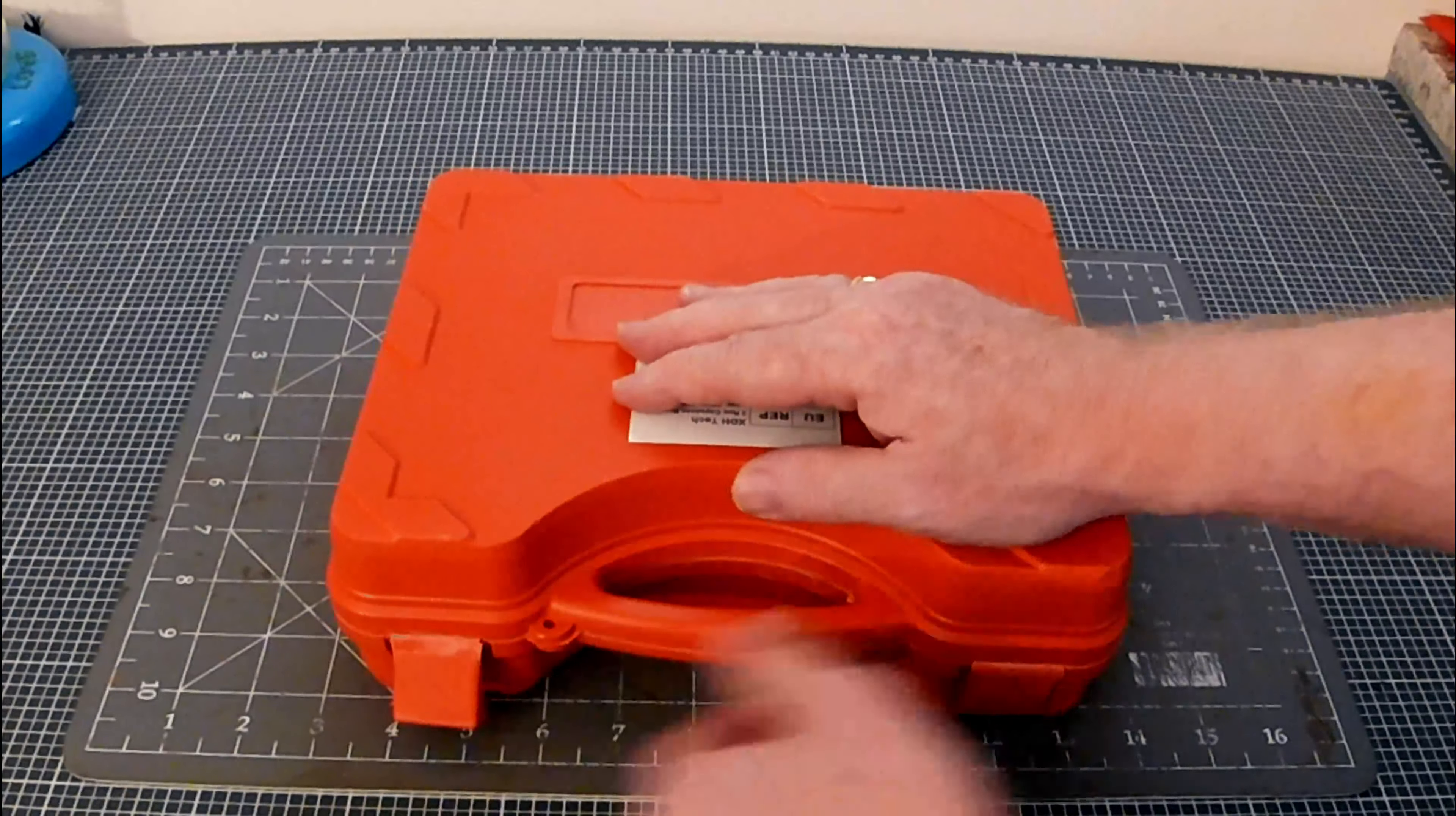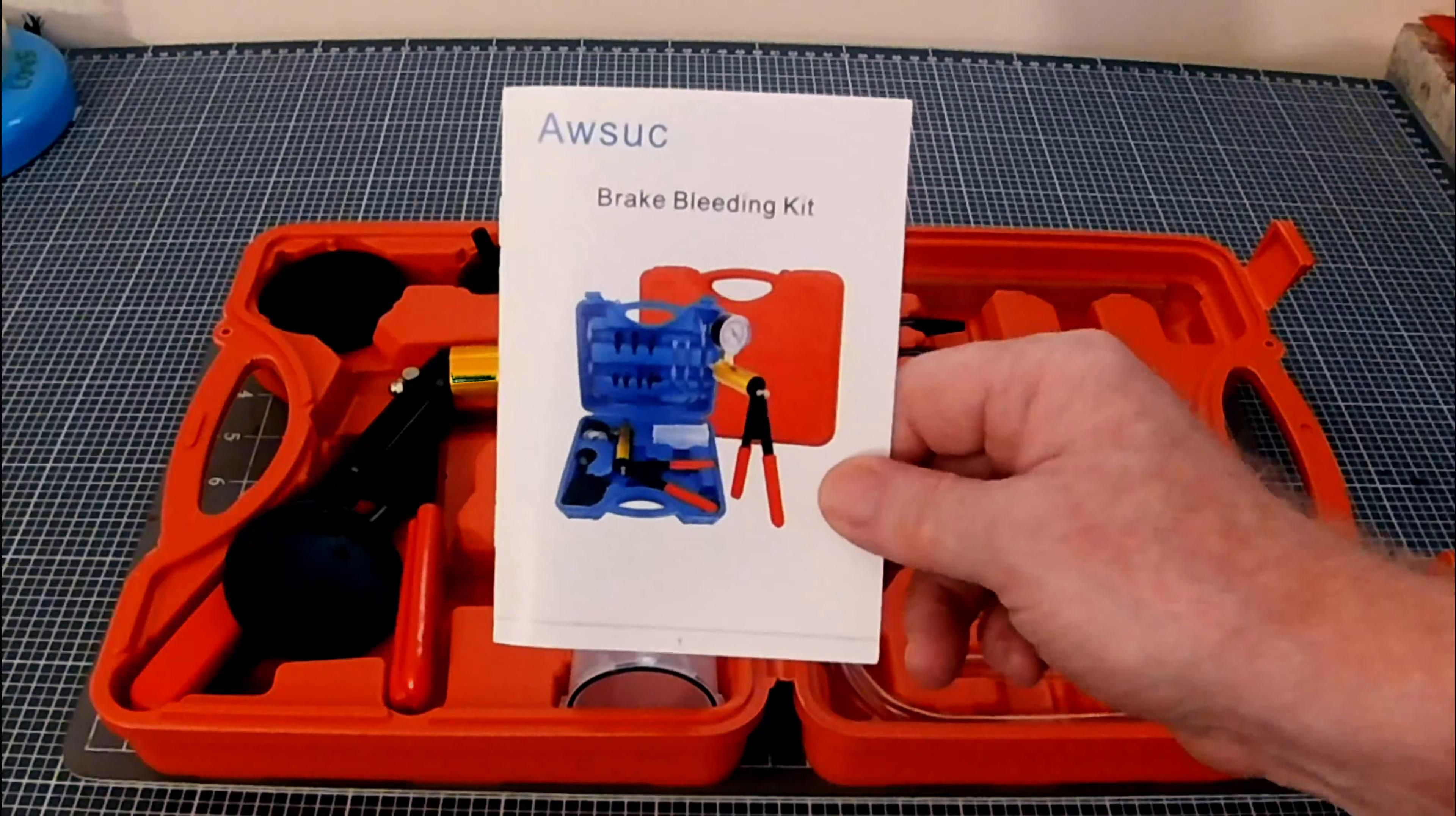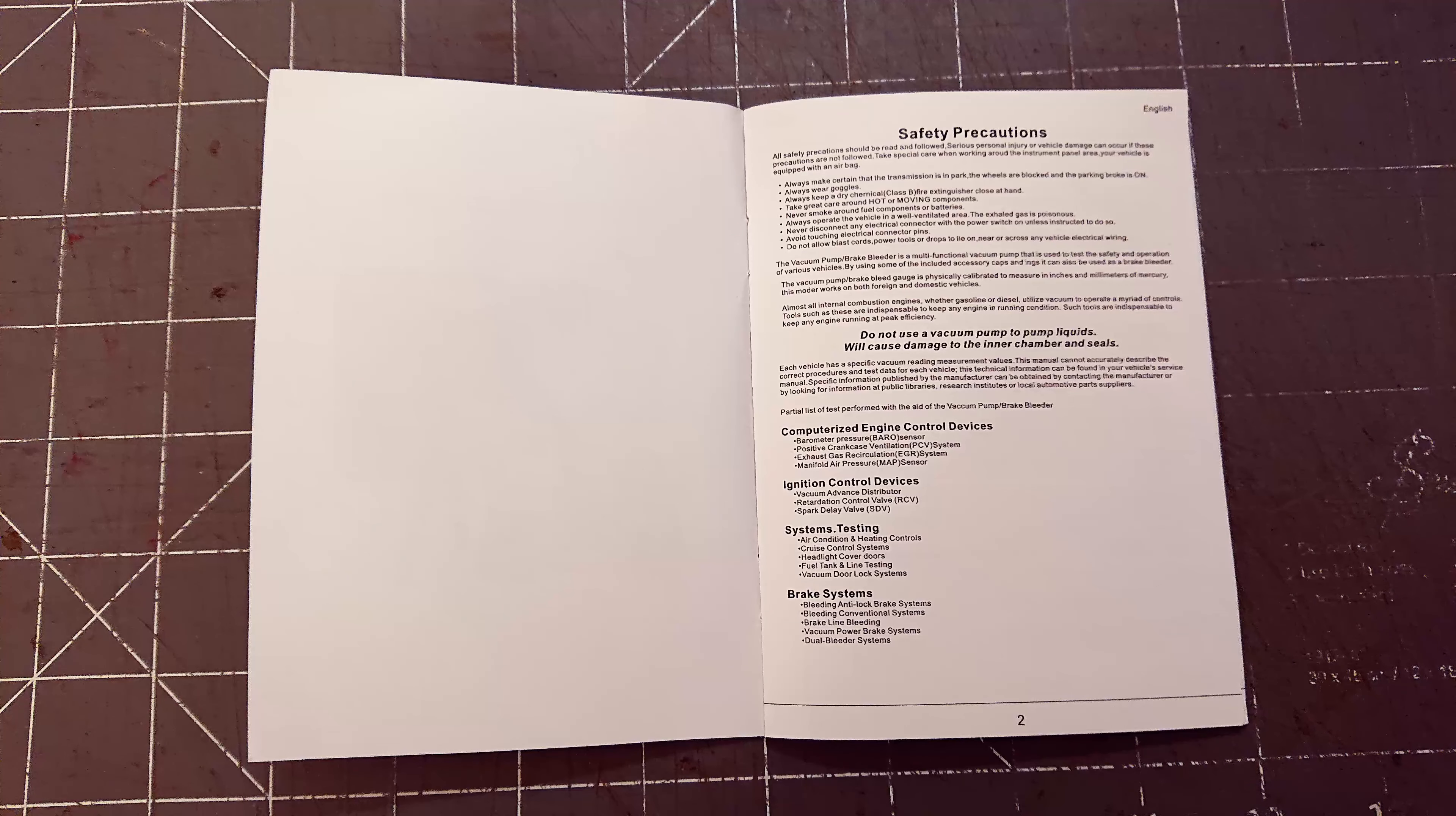Opening the box, I'll turn it around so it's easier to see. We have the user manual. It says brake bleeding kit, but it'll actually do a lot more. I will show this better somewhere, but that's a list of the types of things you can use this kit for.